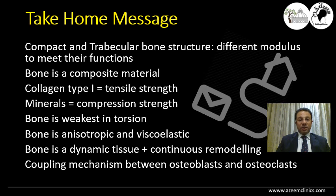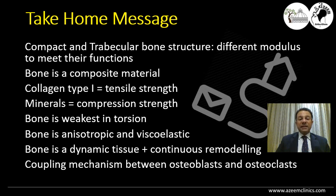My take-home messages: macroscopically we have two types of bone — compact and trabecular bone — each with a different modulus of elasticity to meet its functional demands. Bone is a composite material formed of organic material — mainly collagen type 1 — present to antagonize tensile forces, and inorganic material — mainly calcium phosphate crystals — present to antagonize compression forces. Bone is weakest in torsion — this is what we call anisotropy — and it responds differently to different rates of loading, making it viscoelastic. Bone is in a dynamic state of continuous remodeling under the coupling mechanism between the osteoblasts and osteoclasts. Thank you.